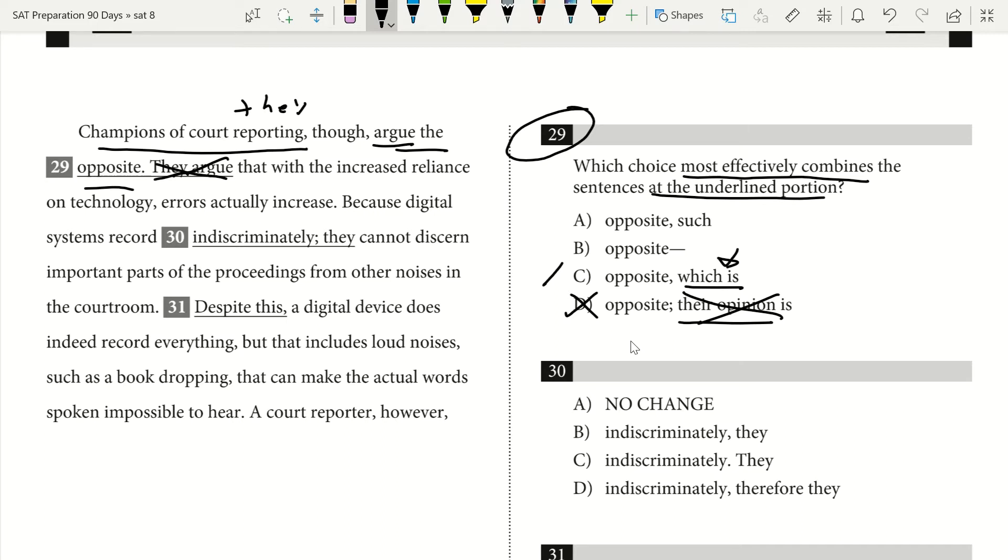So we've got champions of court reporting though argue the opposite. Well, what is the opposite? It's that with increased reliance on technology, errors actually increase. So I see I don't even need 'they argue.' I also don't need 'which is.' So I see that that will for sure be wordy and there's definitely a more efficient way to say it. So I don't want to use C.